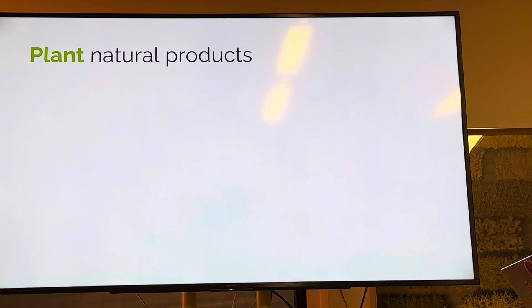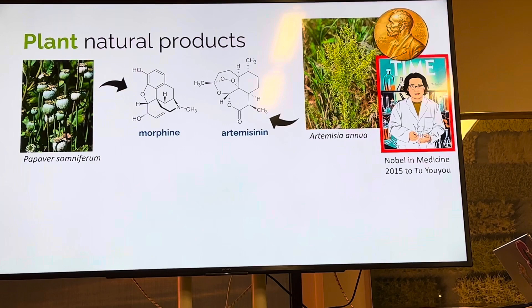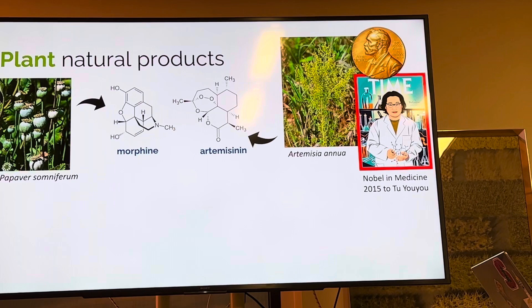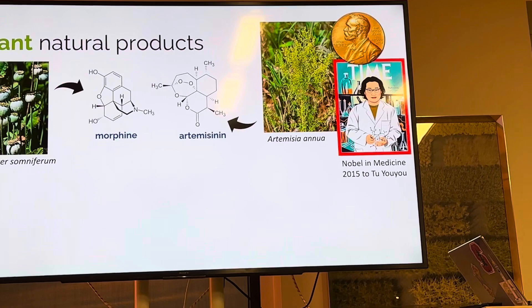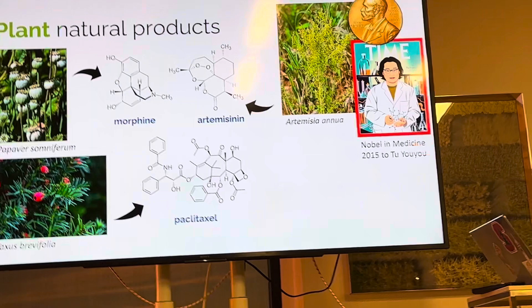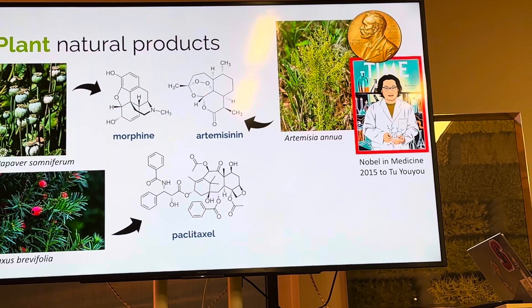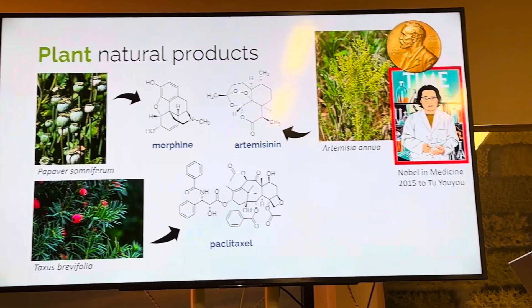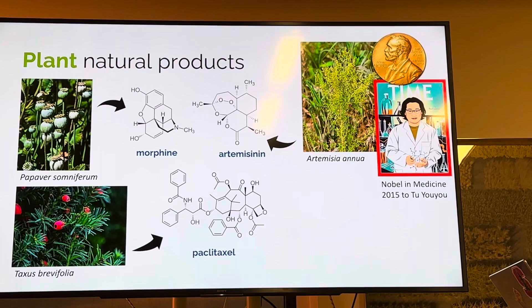So, plant natural products. Nature is a remarkable chemist, and the plant kingdom is the most chemically diverse kingdom among any living kingdom. We're not only talking about products relevant for agriculture, food production, food additives, or cosmetics, but also very important pharmacological products. Morphine, the most famous painkiller in history, comes from the common poppy. Artemisinin is an anti-malarial drug for which the Nobel Prize in Medicine was awarded in 2015, and it comes from sweet wormwood.